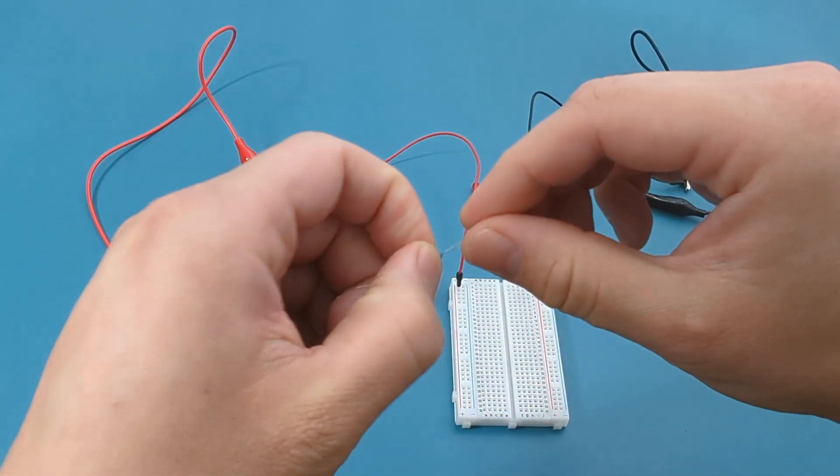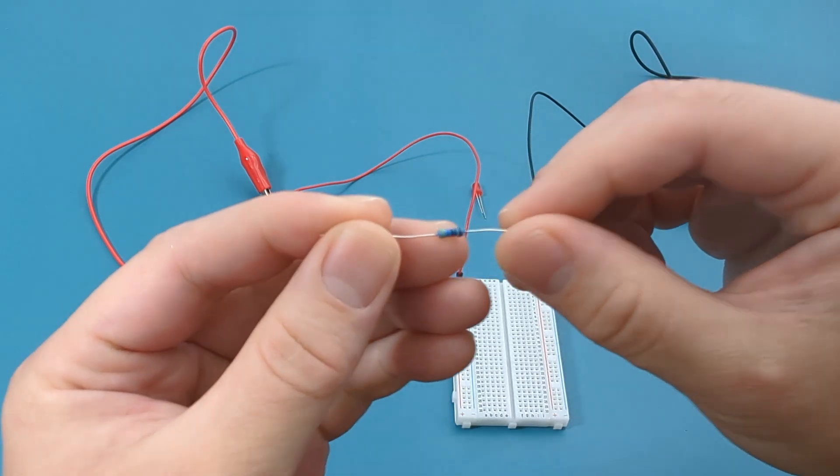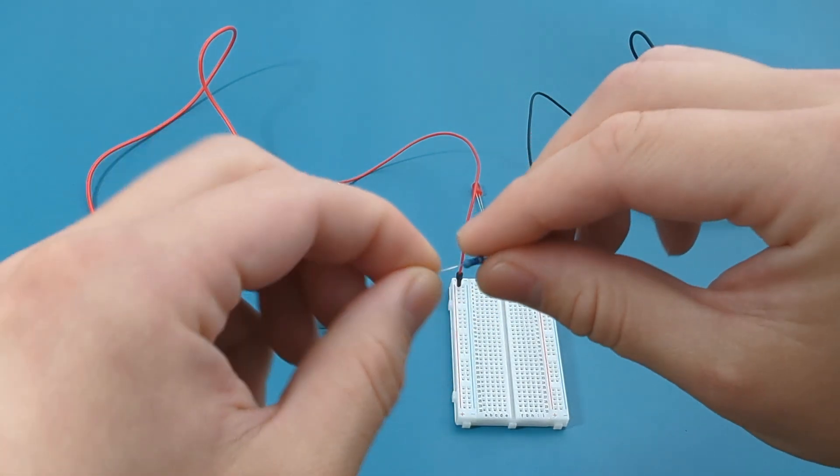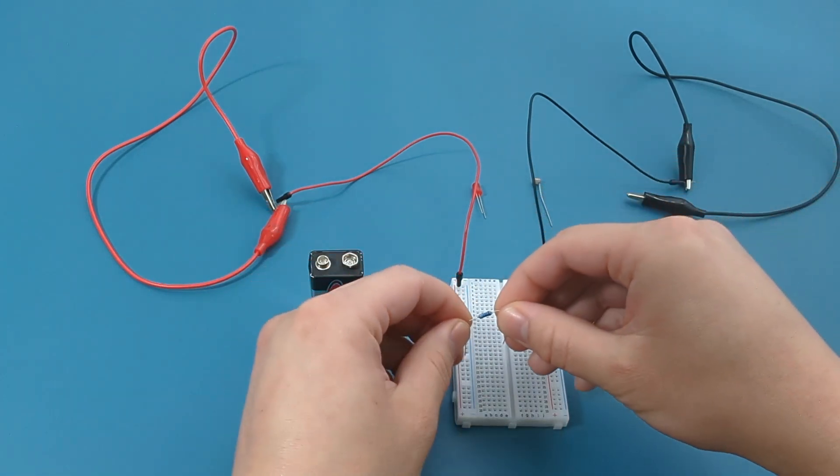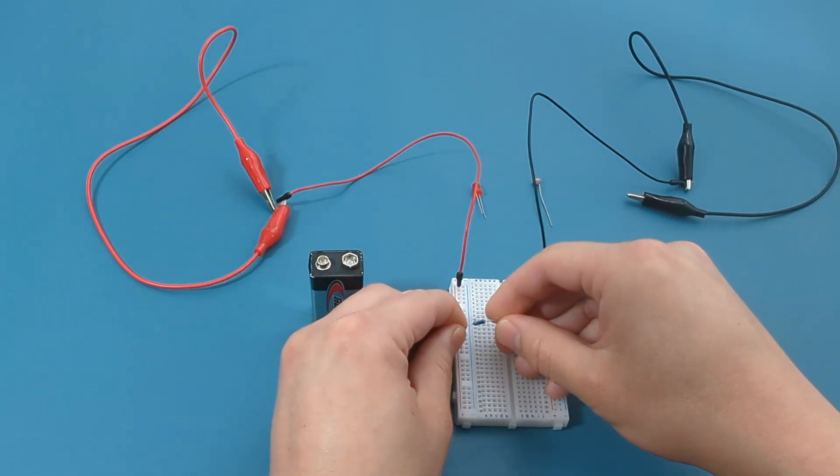This is a 470 ohms resistor. This resistor will help control the current flowing through the LED to prevent it from burning out. Bend the wire ends of the resistor. Insert the left side of the resistor into the same column as the red jumper wire.